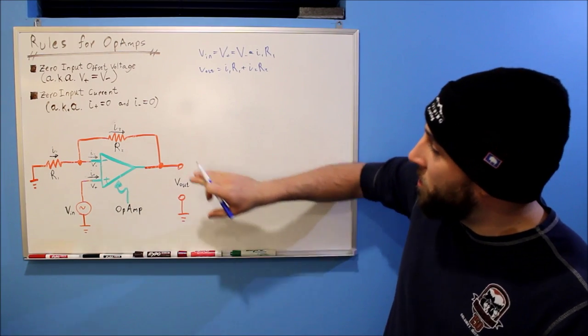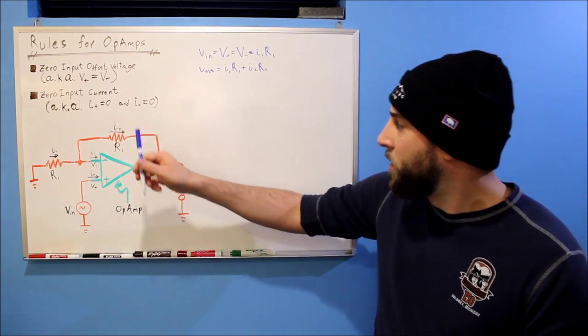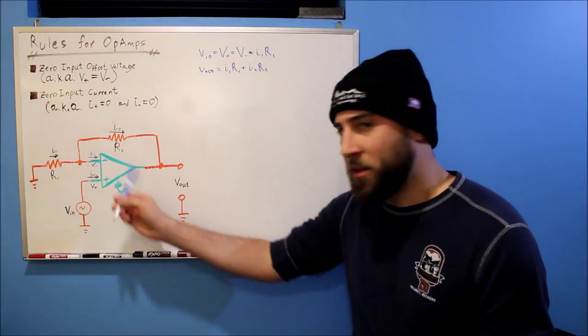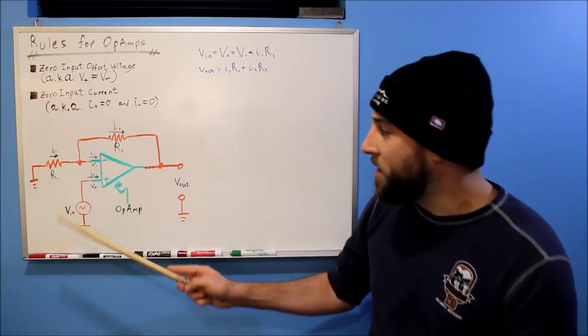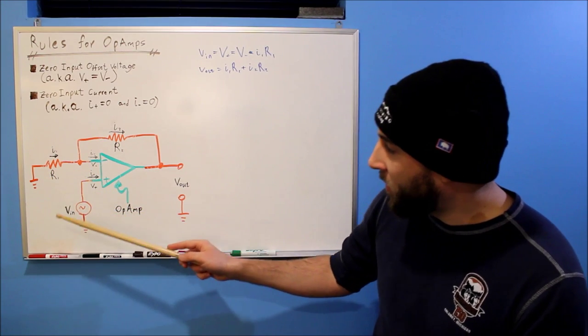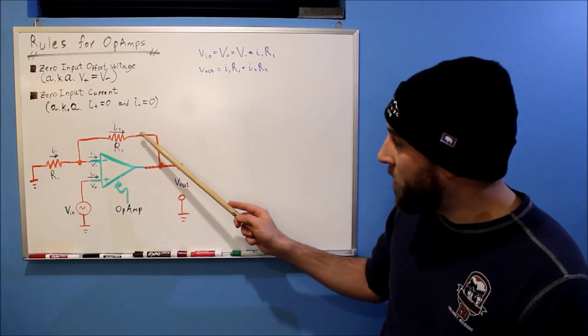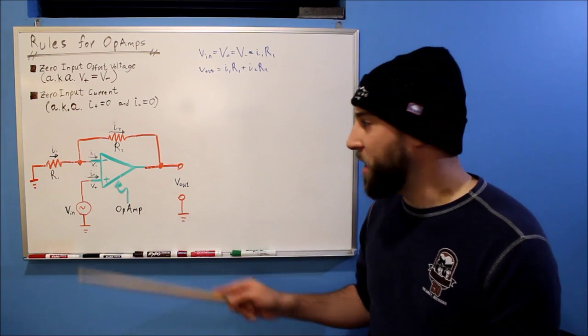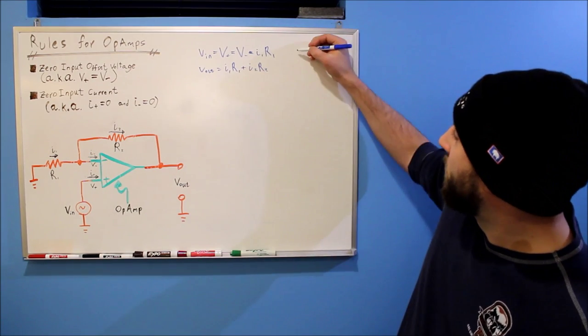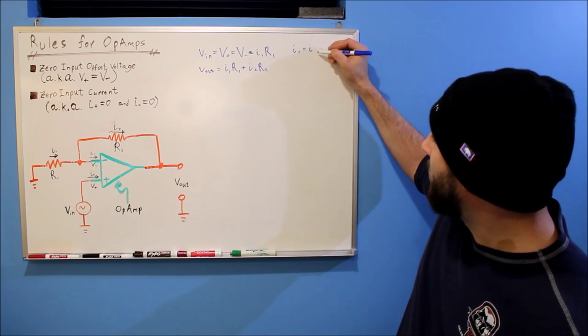So one thing that we know is that our I plus and our I minus are both equal to zero. In this case, I minus equals zero. That's an important thing. Because that tells us that if we analyze this node, that the current coming in from R1 and the current going out through R2, they're the same because there's no current flowing through this input terminal. So we could say I1 equals I2.